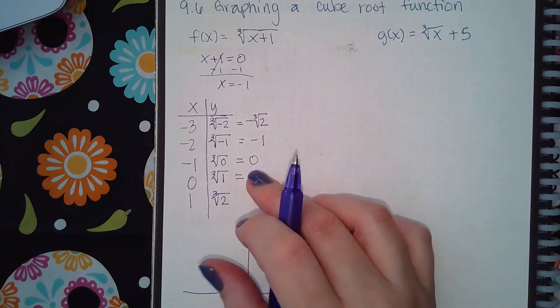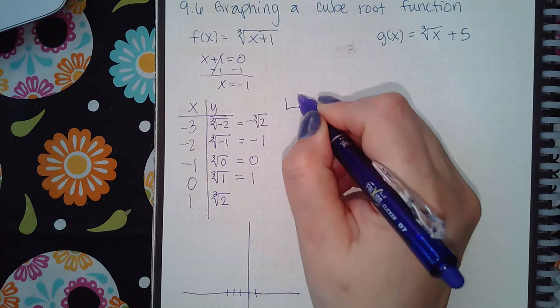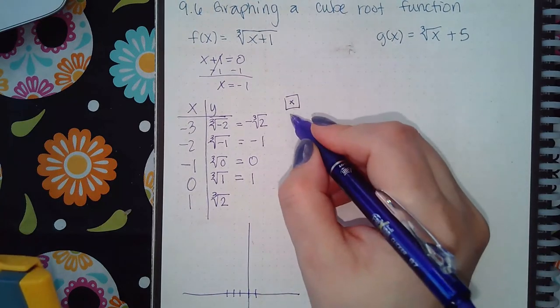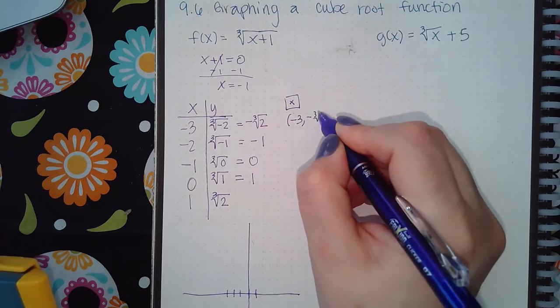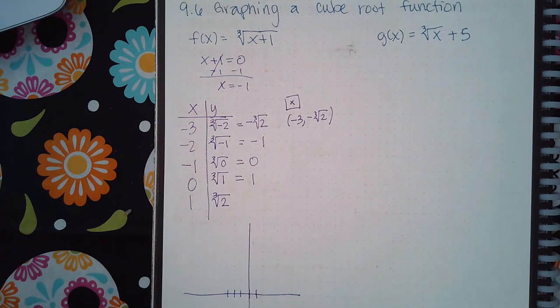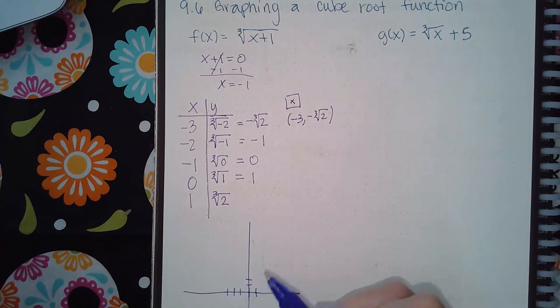Now in the computer, you can type in the point using the little button that has the little x in it. Then you can type in negative 3, negative cube root of 2, and as long as you type that in correctly, it should be able to graph that point for you.